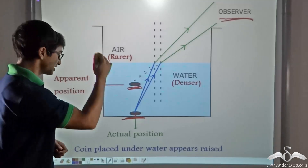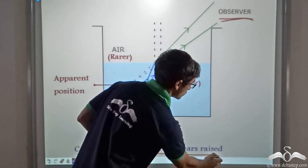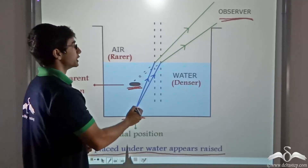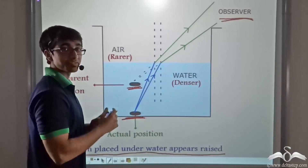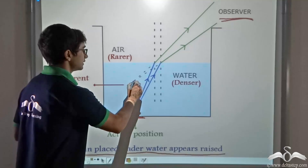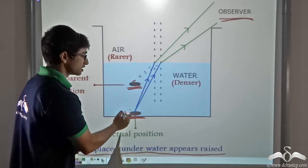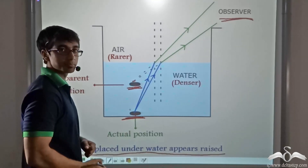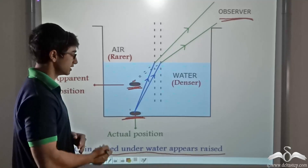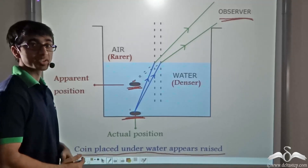It is due to this reason that the coin placed underwater appears raised, because due to the extrapolation of the refracted rays, they seem to be coming from a point that does not correspond with the original point — but it is raised. So this is the reason why the coin placed underwater appears raised.